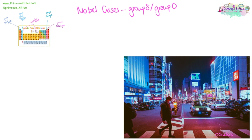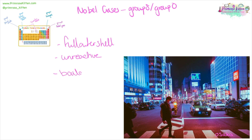The noble gases have a full outer shell, and because they have a full outer shell they don't want to gain or lose any electrons, which means they are really, really unreactive. And because they are unreactive, they actually have quite a lot of uses. Helium we use in balloons, and they are also used in neon lights, as you can see here in the amazing city of Osaka.